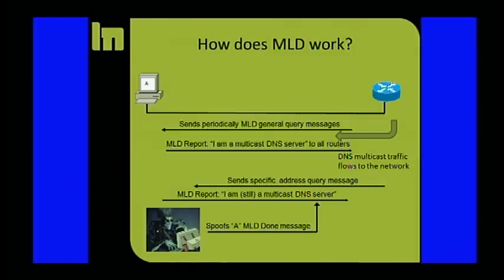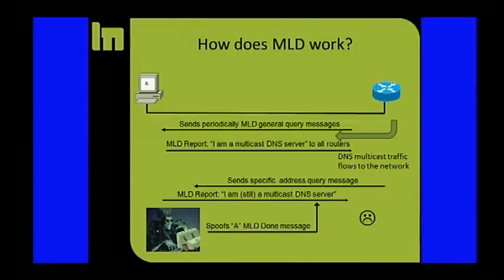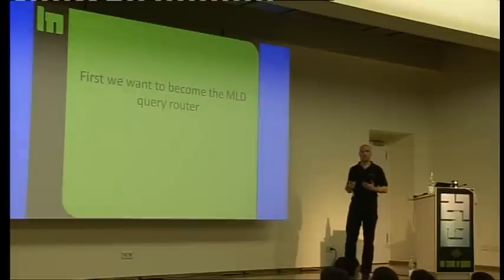But what happens is that the router, if he sees he's telling me he doesn't want to receive the traffic, there might be somebody else still wanting that traffic. So the router sends, again, a packet saying, really, doesn't anyone on the network want that kind of multicast traffic anymore? And then, of course, system A replies, I'm still multicast and I want that traffic. So that was not working.